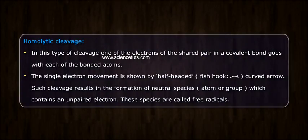Homolytic cleavage. In this type of cleavage, one of the electrons of the shared pair in a covalent bond goes with each of the bonded atoms. The single electron movement is shown by half-headed fishhook curved arrow. Such cleavage results in the formation of neutral species, atom or group, which contains an unpaired electron. These species are called free radicals.